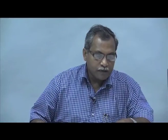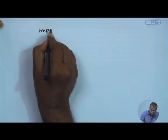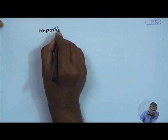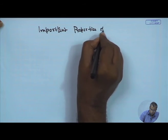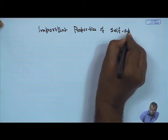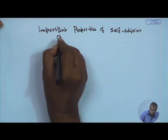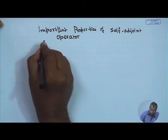By establishing that the Sturm-Liouville problem is a self-adjoint problem, let us now look into the various properties of the self-adjoint problem that we can exploit when using separation of variables. There are certain important properties of self-adjoint operators we should examine.